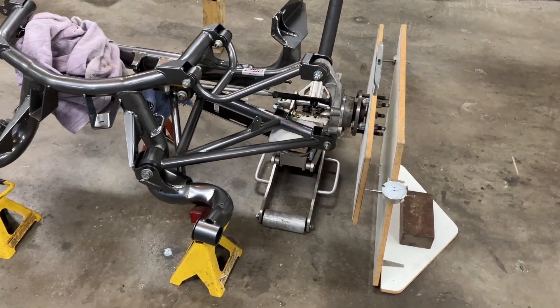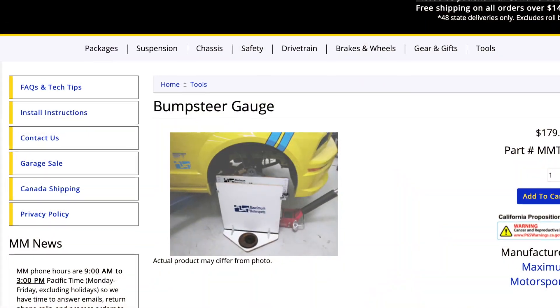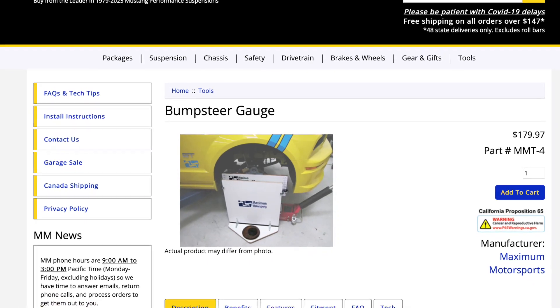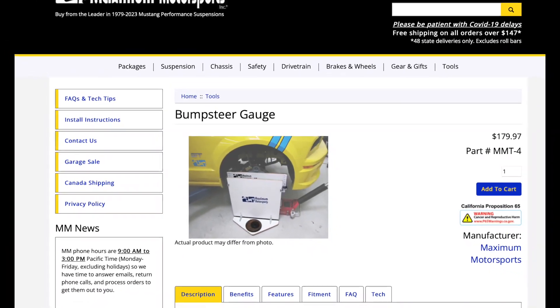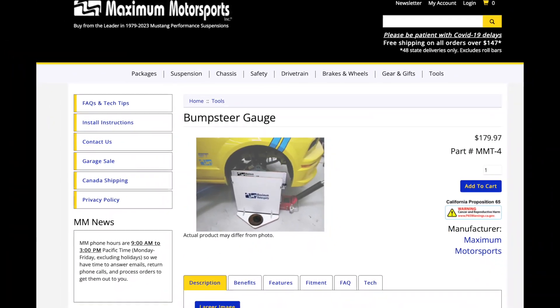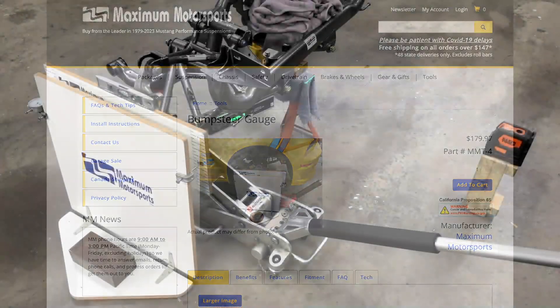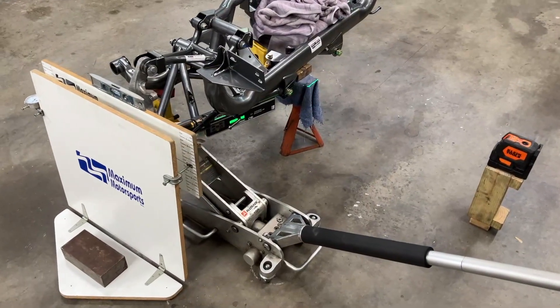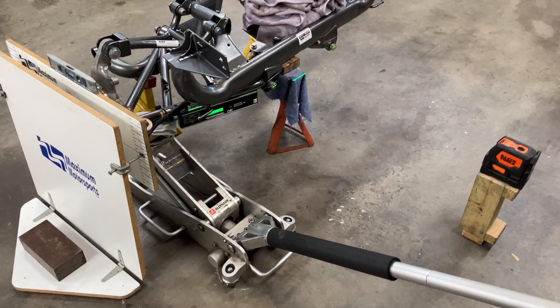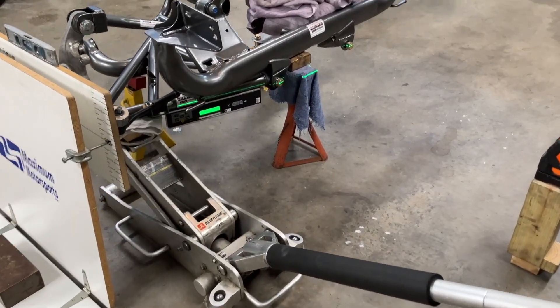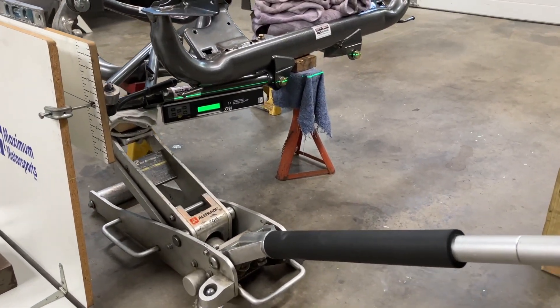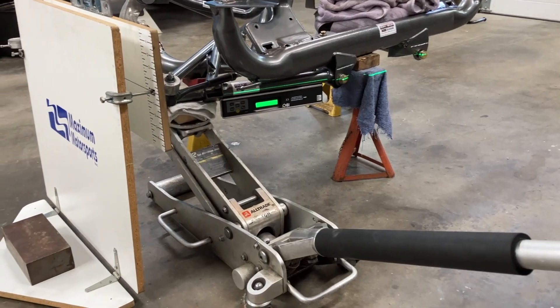For this video, I'm using a bump steer gauge from Maximum Motorsports. It's simple, inexpensive, and it works great. We're measuring bump steer on a Mustang Cobra IRS before installation, but you can use this method for the front as well, and the suspension doesn't have to be out of the car. Having the suspension out of the car is just easier to show you what's going on.